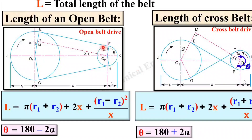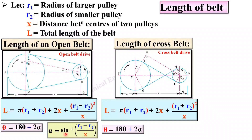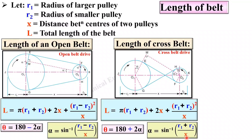In case of open belt drive, the contact angle will be less than in cross belt drive, so it will be minus 2 alpha, and for cross belt drive it will be plus 2 alpha. If you want to find alpha, the equation is: alpha = sin⁻¹[(R1 − R2) / x] for open belt drive, and alpha = sin⁻¹[(R1 + R2) / x] for cross belt drive.